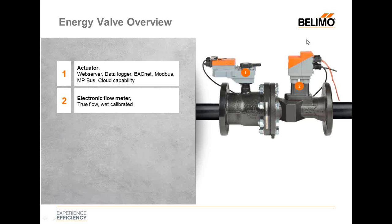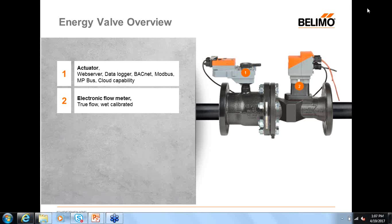Now I'll talk about the electronic flow meter. This is a picture of the new ultrasonic we are coming out with. It provides a true flow reading as opposed to a flow calculation like you would receive with a mechanical pressure-independent valve. You actually have a true GPM reading, and all of our ultrasonic flow meters will be wet calibrated, which means they're guaranteed for accuracy and repeatability as they're wet calibrated before they leave the factory.